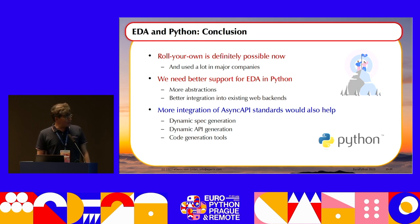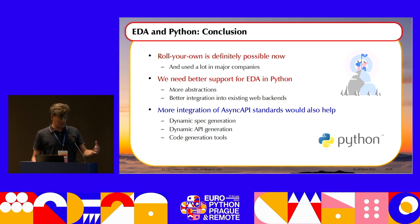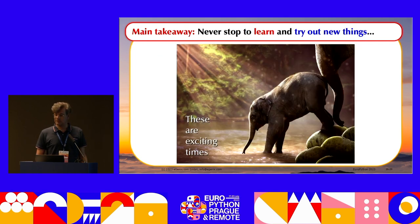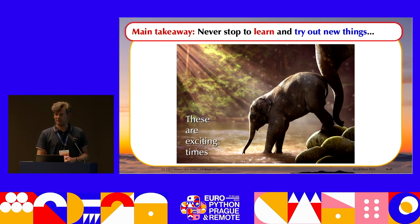On the good side, all the different broker systems I talked about have Python interfaces, and these are used a lot. So it's definitely possible to roll your own and work with brokers directly without relying on AsyncAPI modules. Conclusion: rolling your own is definitely possible and used by many companies. We need better support for EDA in Python, more people working with the AsyncAPI specification organization to get a foot in the door, and more support in popular Python interfaces. The main takeaway: never stop learning, and always try out new things. We often live in a bubble in the Python world — there's lots of great Java software at the Apache Software Foundation, and most of those projects have Python interfaces.